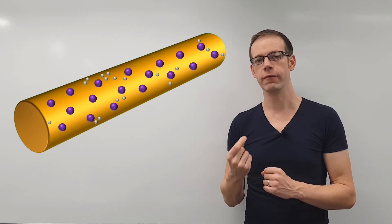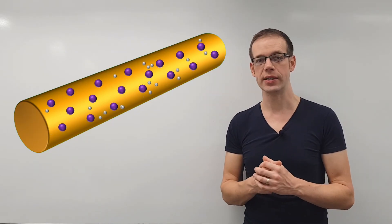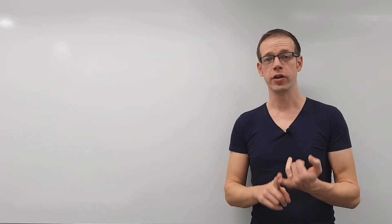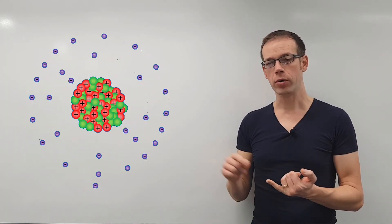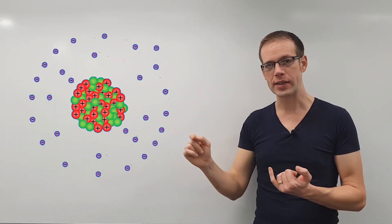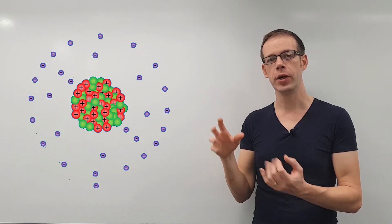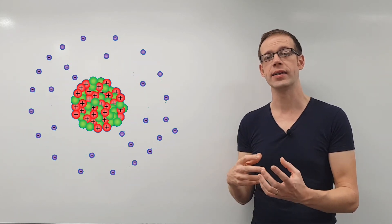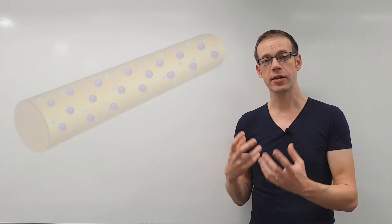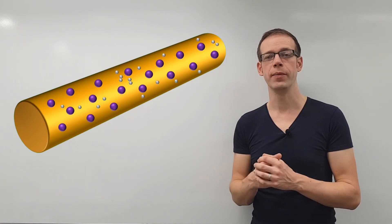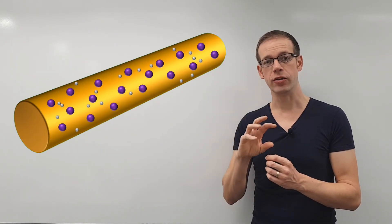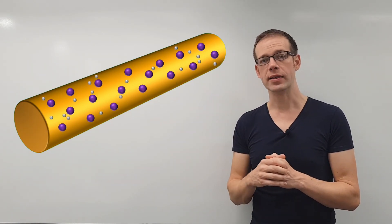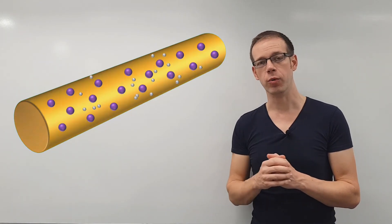That leads us on to our next question: how can we get those electrons working for us, and how does this all relate to electricity? To summarize what we've learned in this video: we've looked at the structure of a copper atom and seen that it has that all-important 29th electron on its outer shell, which only has a very vague relationship with its parent atom. We've seen that electron can be easily convinced to move from one atom to another, and we know that inside a piece of conductive material such as copper there are free electrons just randomly drifting from atom to atom. In our next video, we're going to see how we can harness those electrons and make them work for us.